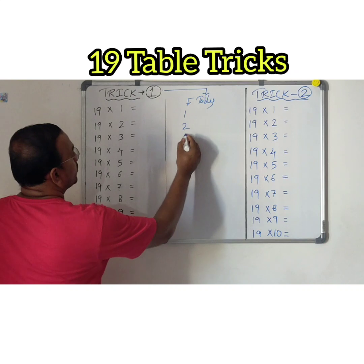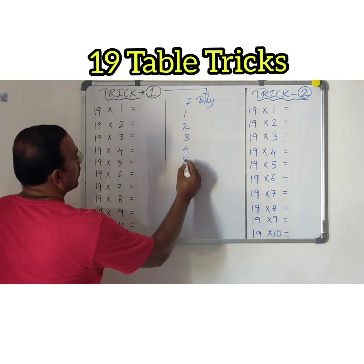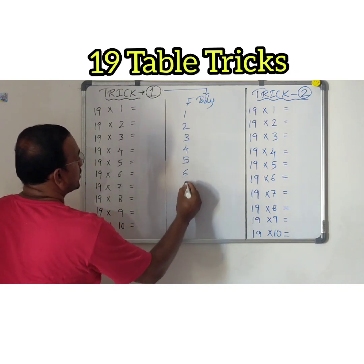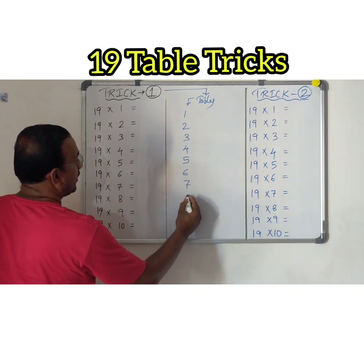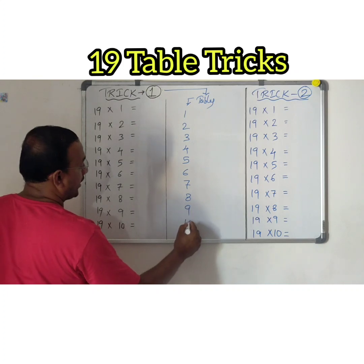So I am going to write table 1 first: 1, 2, 3, 4, 5, 6, 7, 8, 9, and 10.